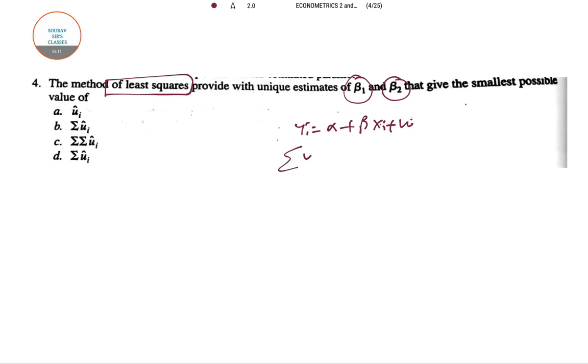So when you put a summation format yi equal to alpha n plus beta summation of xi plus summation of ui. So in case of estimated value only this will be estimated values will be here. So we can say that this gives the smallest possible value of summation of ui. Hence option number D is correct.